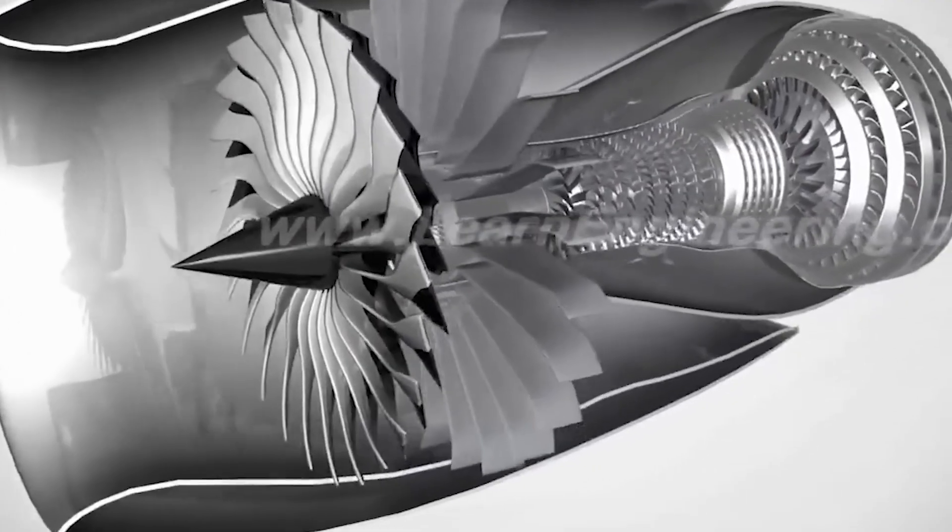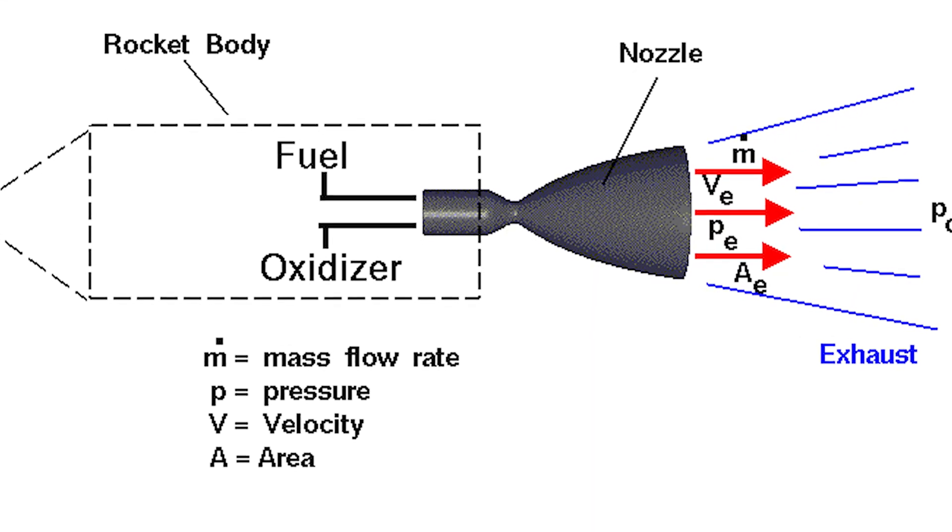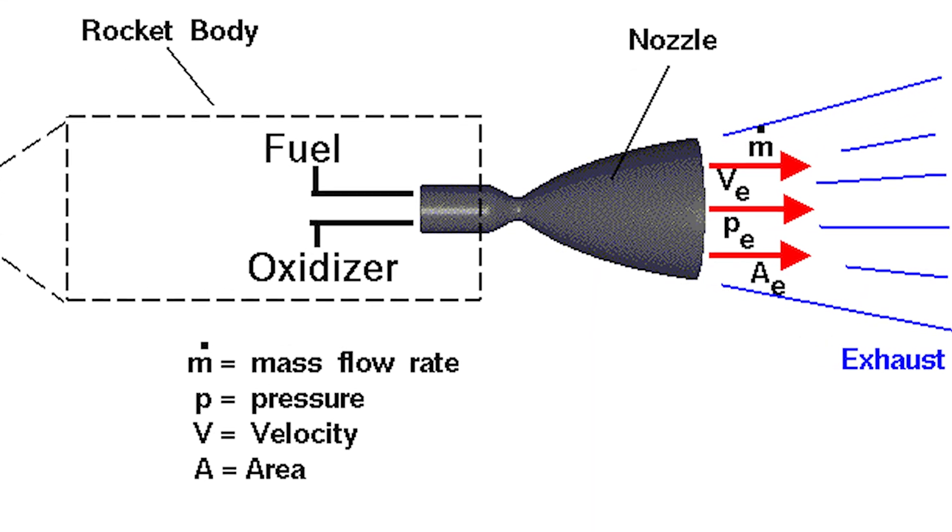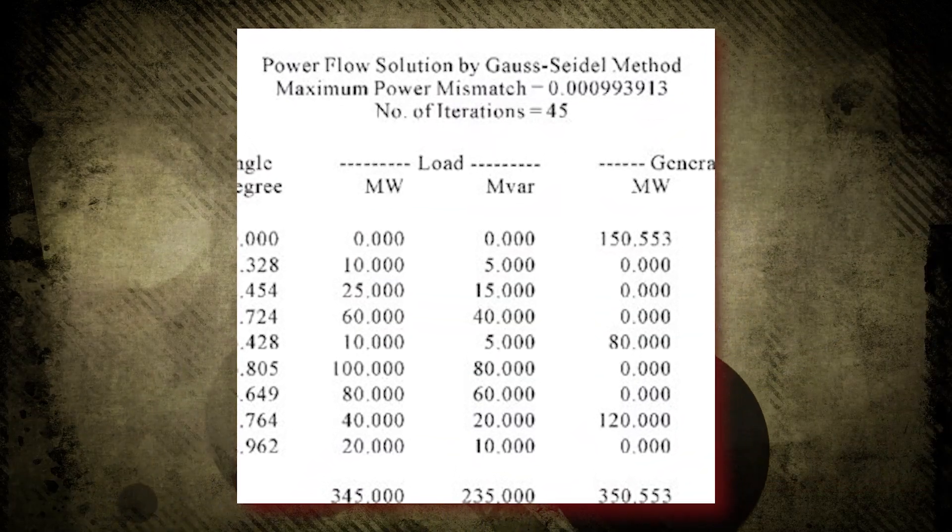The prototype engine demonstrated impressive performance, producing 11 newtons of thrust with a 400-watt microwave jet. Notably, 4 newtons of thrust were generated solely from air pressure, resulting in approximately 28 newtons per kilowatt, showing promise for efficiency.